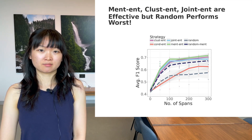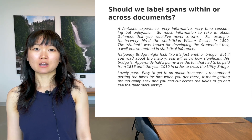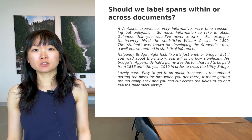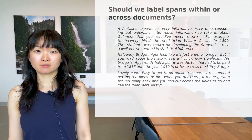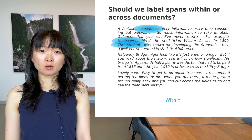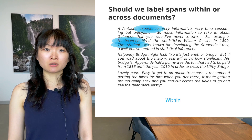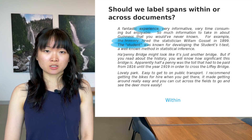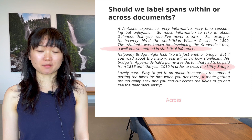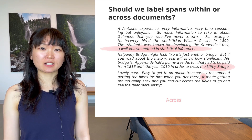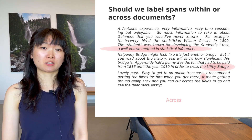In the previous experiments, we limit span sampling to one document per active learning cycle. What happens if we want to sample spans across different document contexts rather than staying within one piece of text? Suppose that we only want to label three spans. If we choose to stay within the same document, we may label only 'the student', 'the brewery', and 'experience' from the first review. However, what if we could label coreference of three spans from three different documents? By covering coreference in different contexts, we may be able to transfer the model to the target domain better.